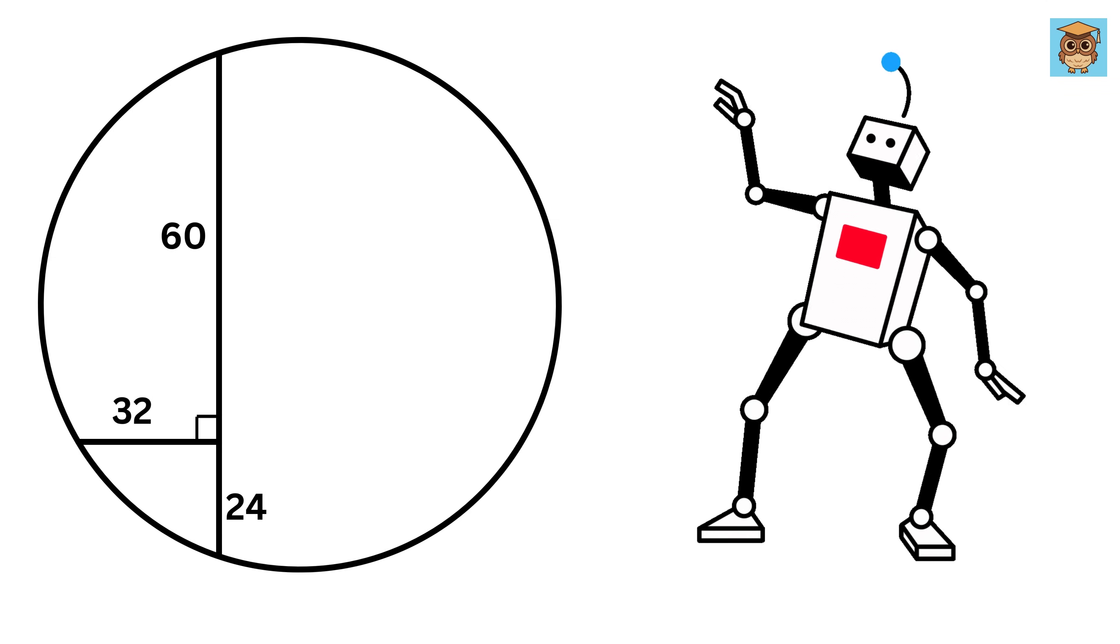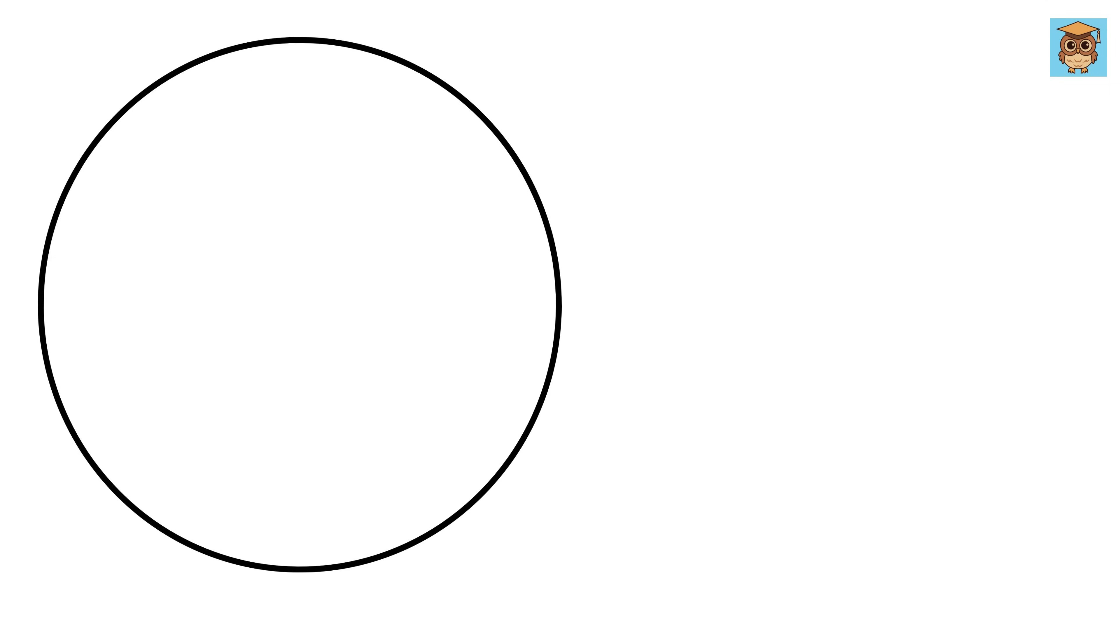This question will make you dance in ecstasy. We have a circle with an unknown radius, then we draw a chord like this.